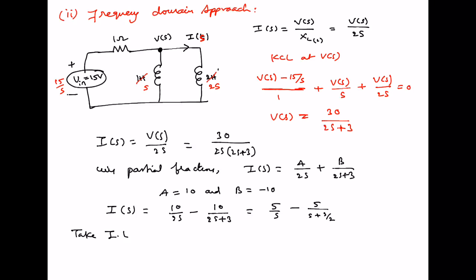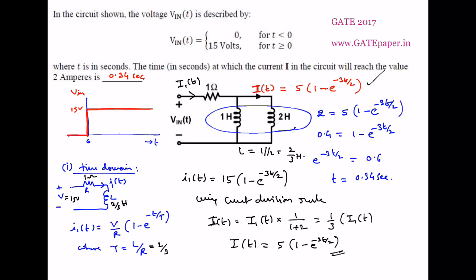Taking the inverse Laplace transform to get I(T): I(T) equals 5 minus 5 into e to the power minus 3T by 2, which is 5 into 1 minus e to the power minus 3T by 2. This is the required expression, obtainable either using the frequency domain or the time domain approach. Once you have the I(T) expression, substitute I(T) equals 2 to calculate the time required. The right option is 0.34 seconds. Thank you.